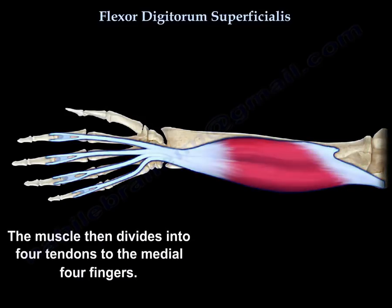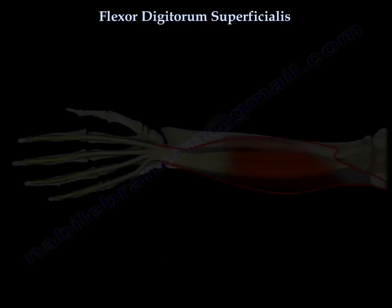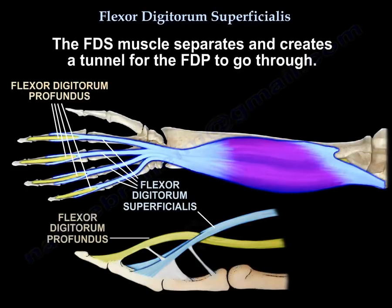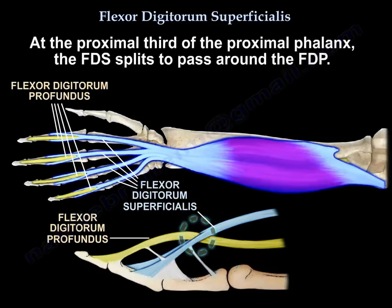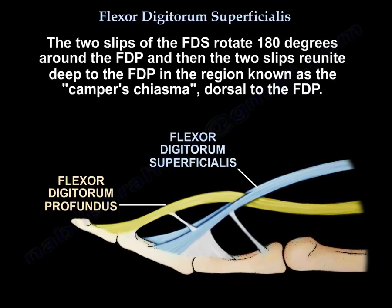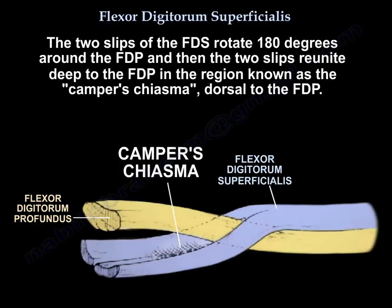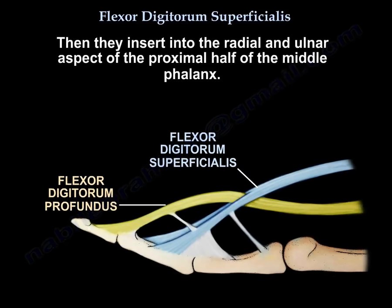The muscle divides into four tendons to the medial four fingers. The muscle separates and creates a tunnel for the profundus to pass through at the proximal third of the proximal phalanx. The flexor digitorum superficialis splits to pass around the profundus; the two slips rotate 180 degrees around the profundus, then reunite in a region known as Camper's chiasma, dorsal to the flexor digitorum profundus.